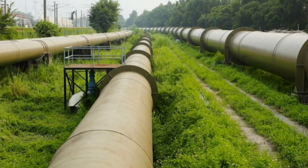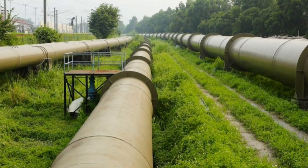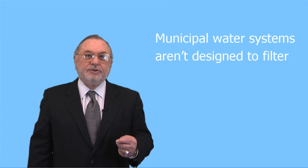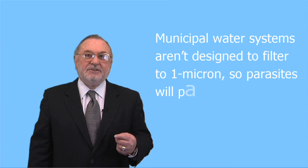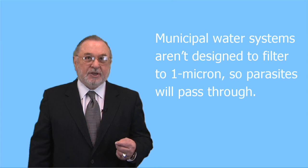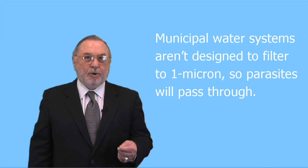In Dallas, Texas, we process hundreds of millions of gallons of water per day. Pipes are huge — they're moving water. If Dallas had to filter down to one micron, you might get a drip out of your faucet. Municipal water systems aren't designed to filter to one micron, so parasites like Cryptosporidium will pass through.